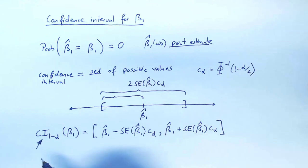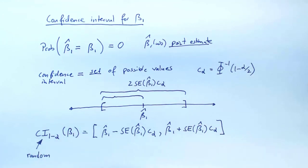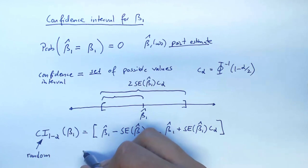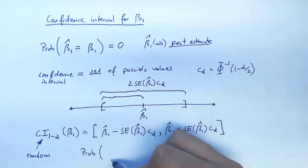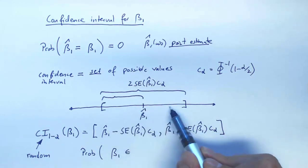So in thinking about constructing such an interval, before we draw the sample, we have to think of this interval as a random quantity. So we can talk about probabilities. For example, we can talk about the probability that the true beta 1 is contained in this interval.